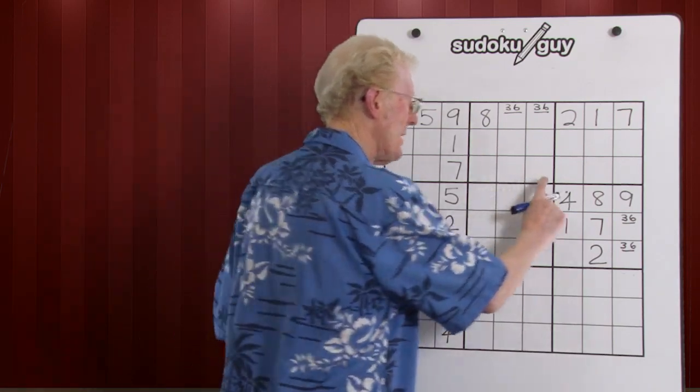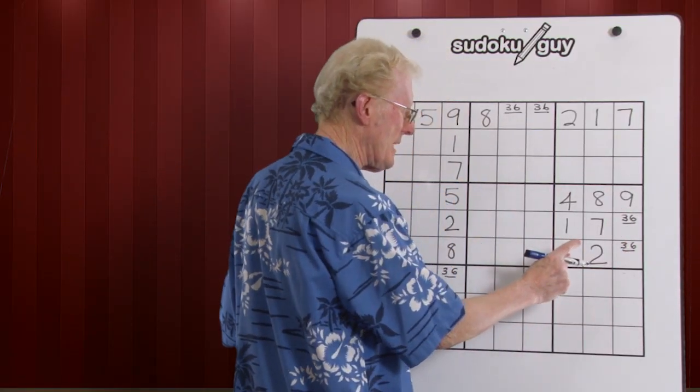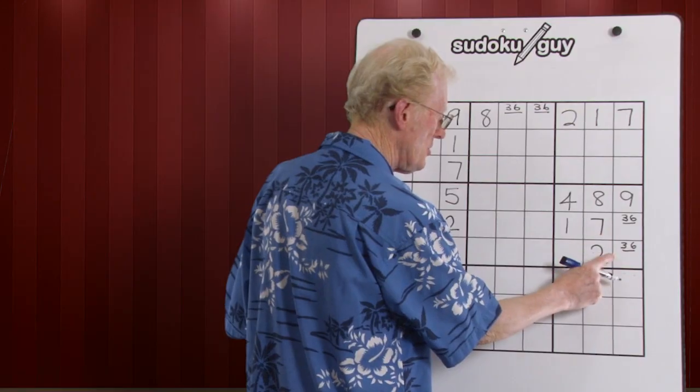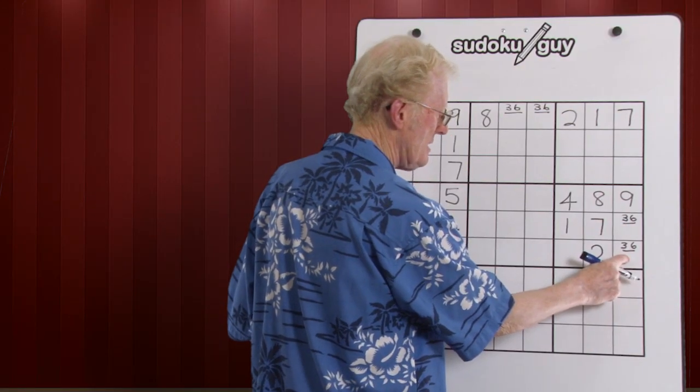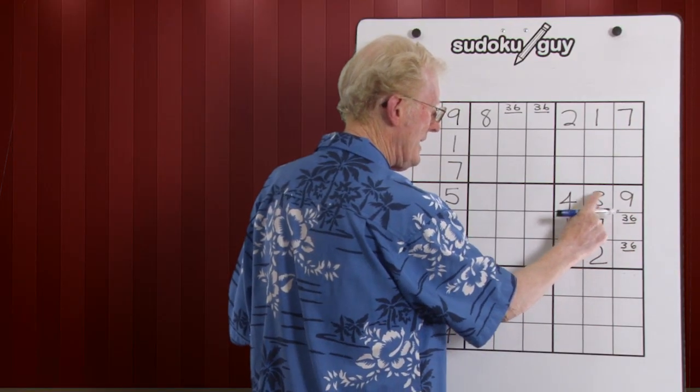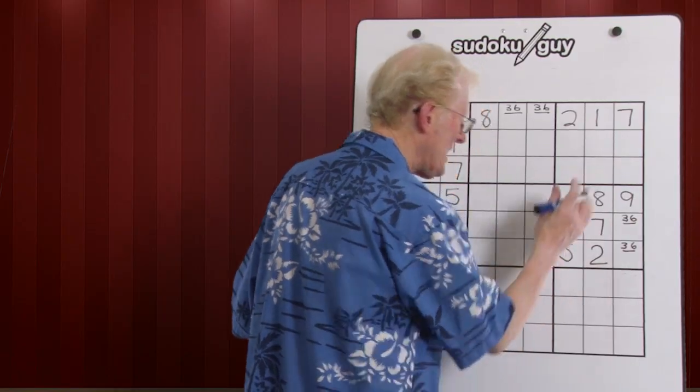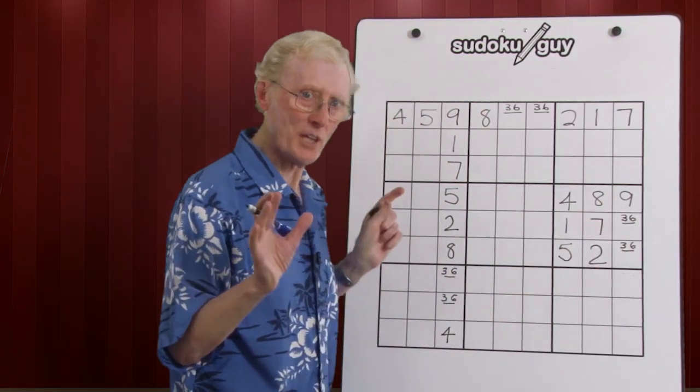Okay, let's take this one now. We've got a three, six, three, six and an empty cell. Once again, we count through. One, two, three is spoken for, four, five is missing, six, seven, eight, nine. So this empty cell has to be a five. And that's how it works. The key is to look for that situation.